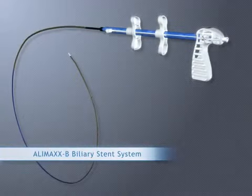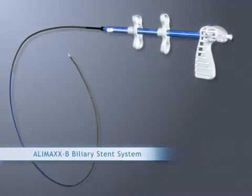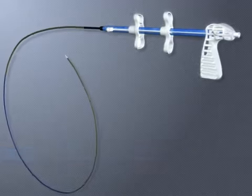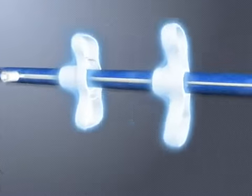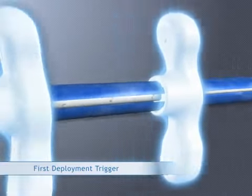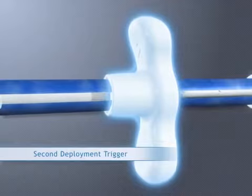The Alimax B biliary stent system is comprised of a low-profile triaxial delivery system and a non-foreshortening stent. There are two deployment triggers. The first trigger deploys half of the stent. The second trigger deploys the remainder of the stent.